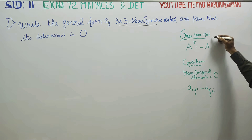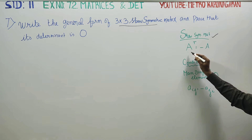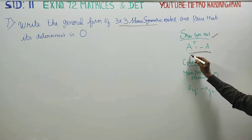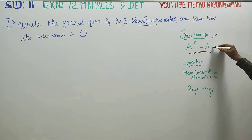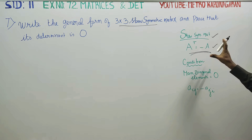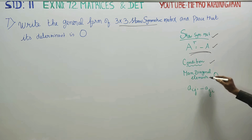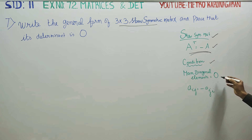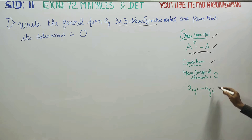What is the meaning of skew matrix? A skew symmetric matrix is defined such that A transpose equals negative A. The condition is that the main diagonal elements must be 0, and A-i-j equals minus A-j-i.